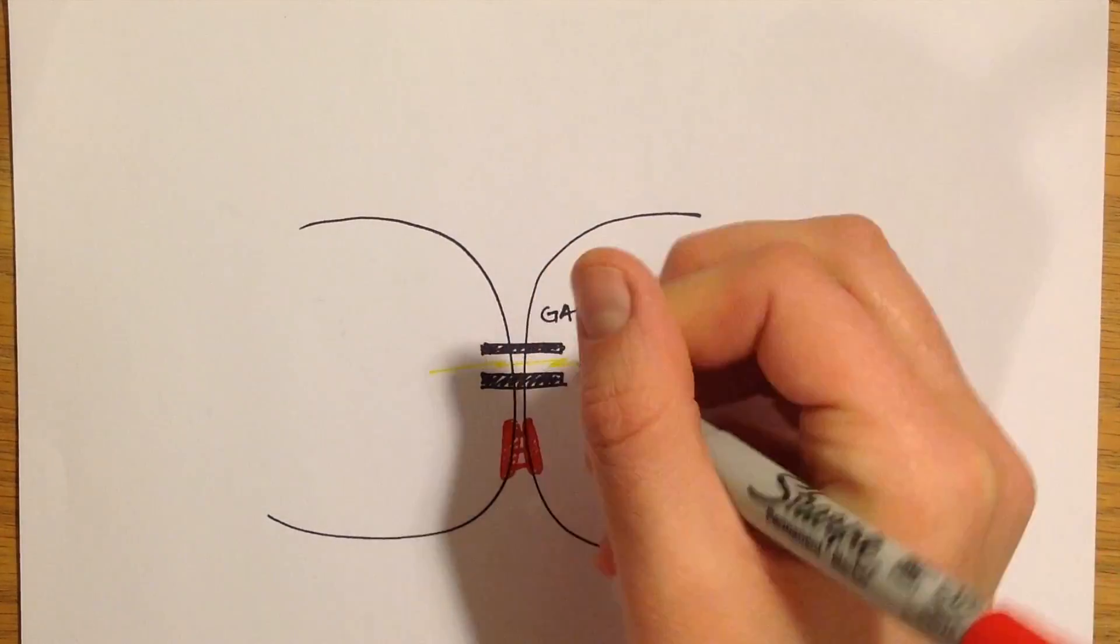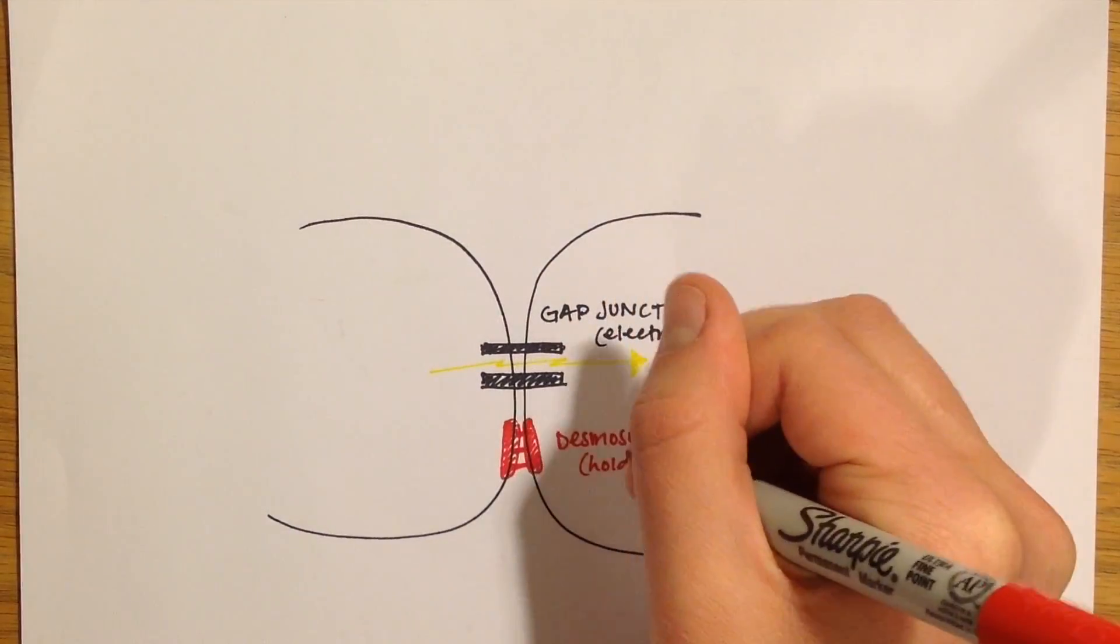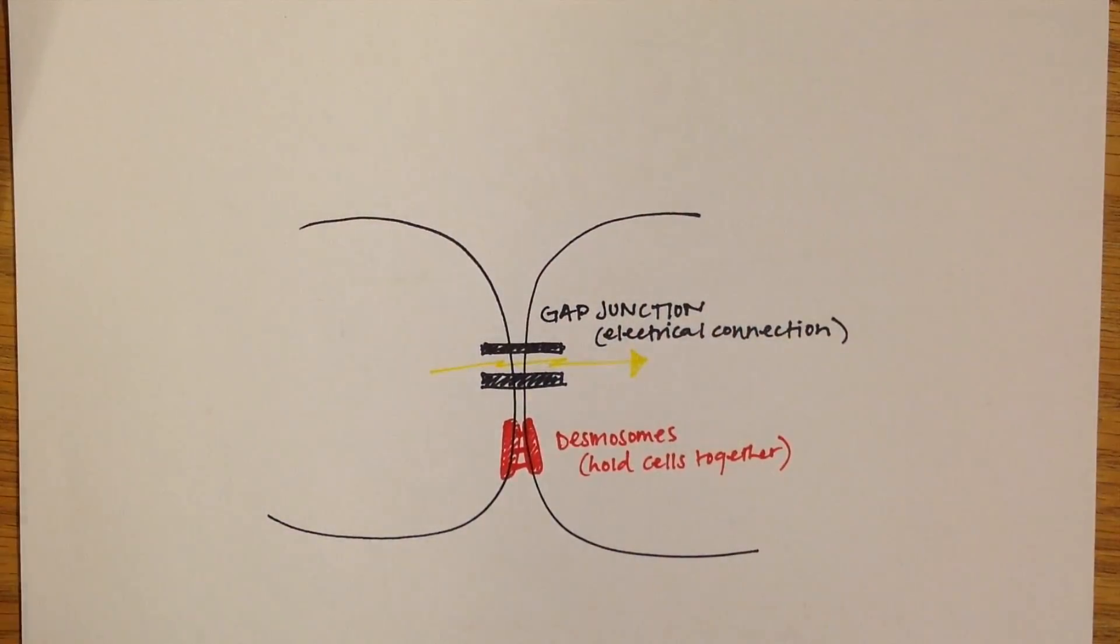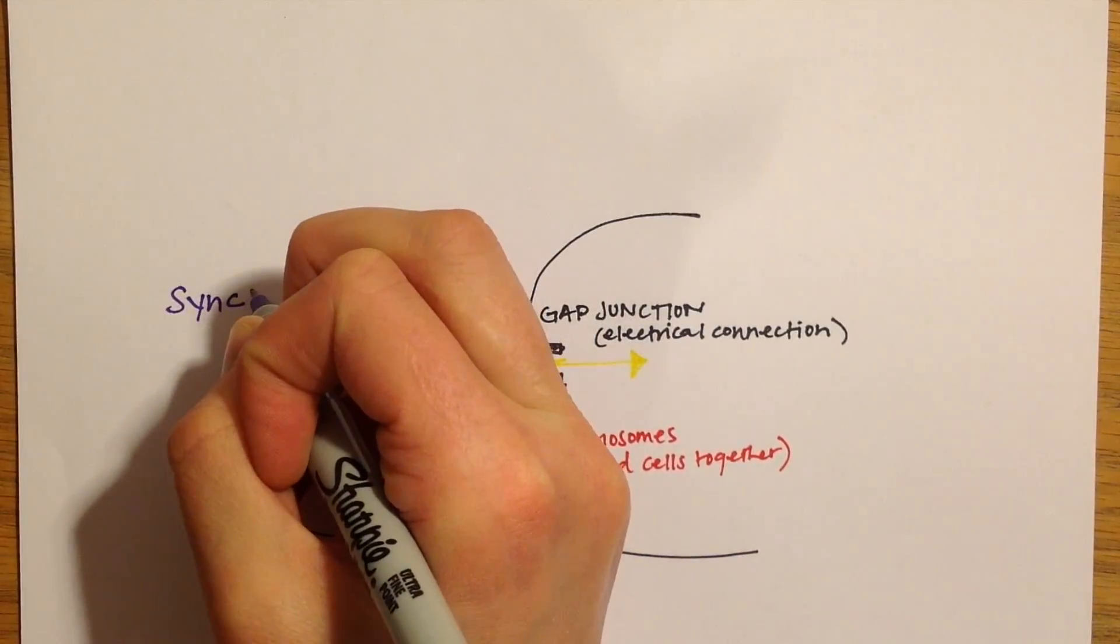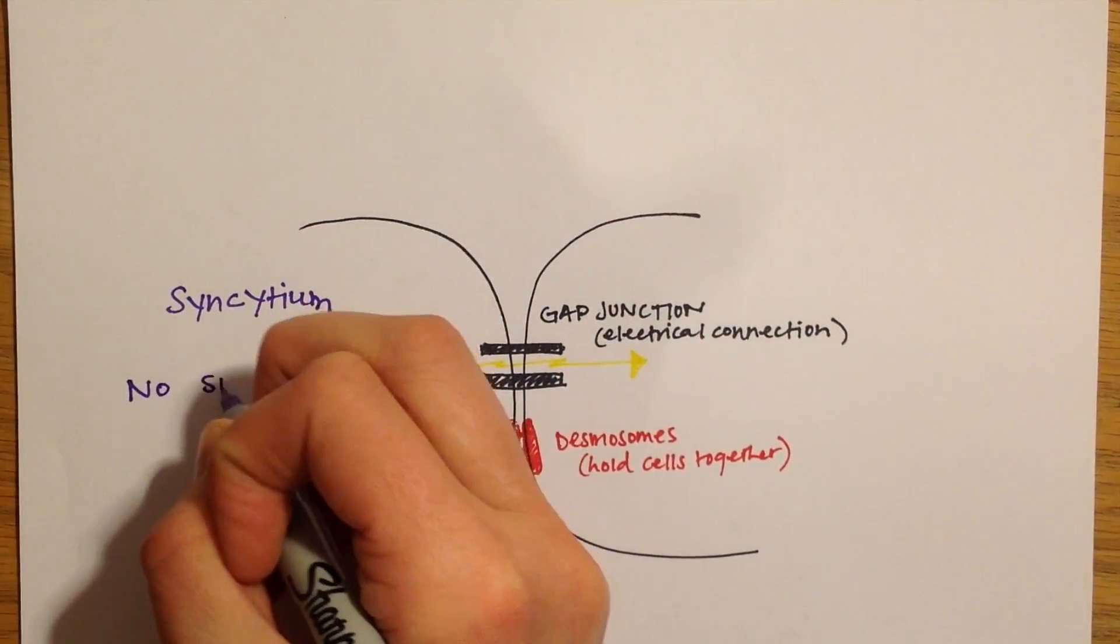The unique nature of the cardiomyocytes allow them to contract in a coordinated effort. This is called syncytium. In cardiac muscles, no summation or fiber recruitment occurs.